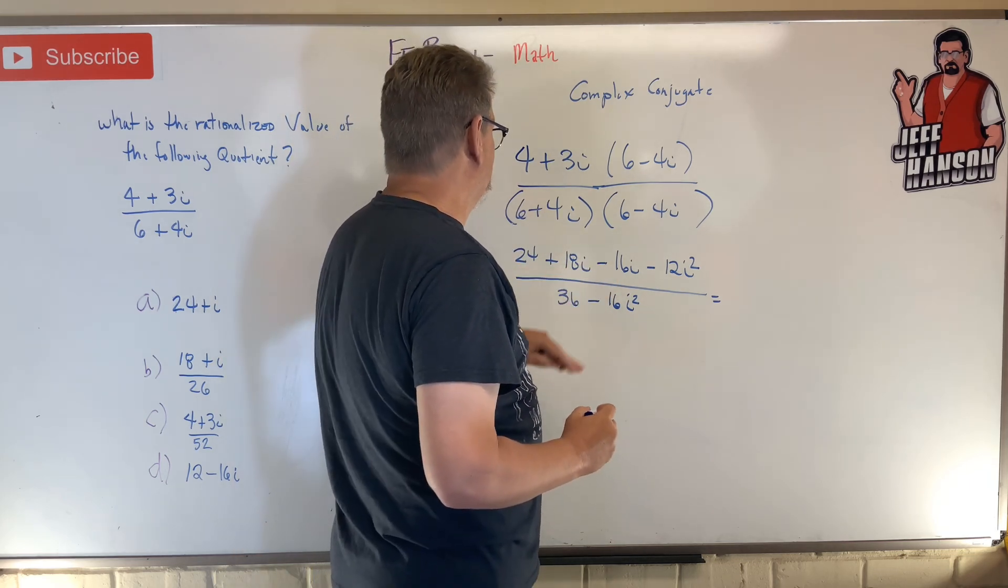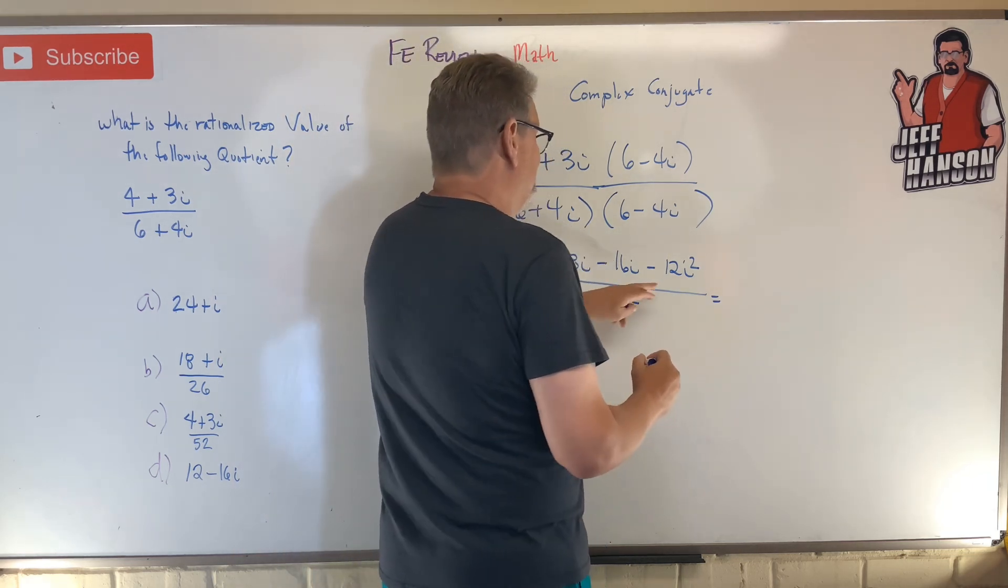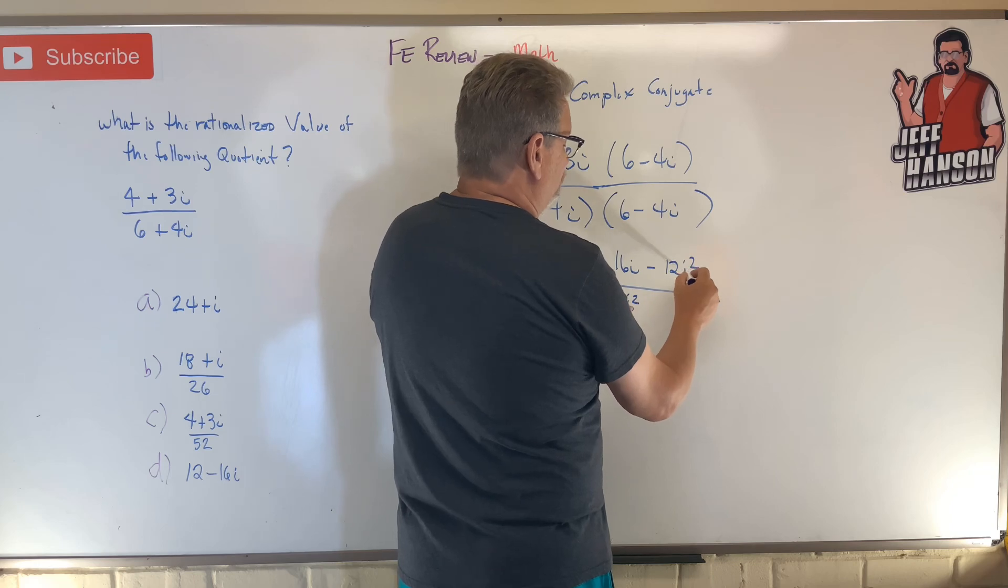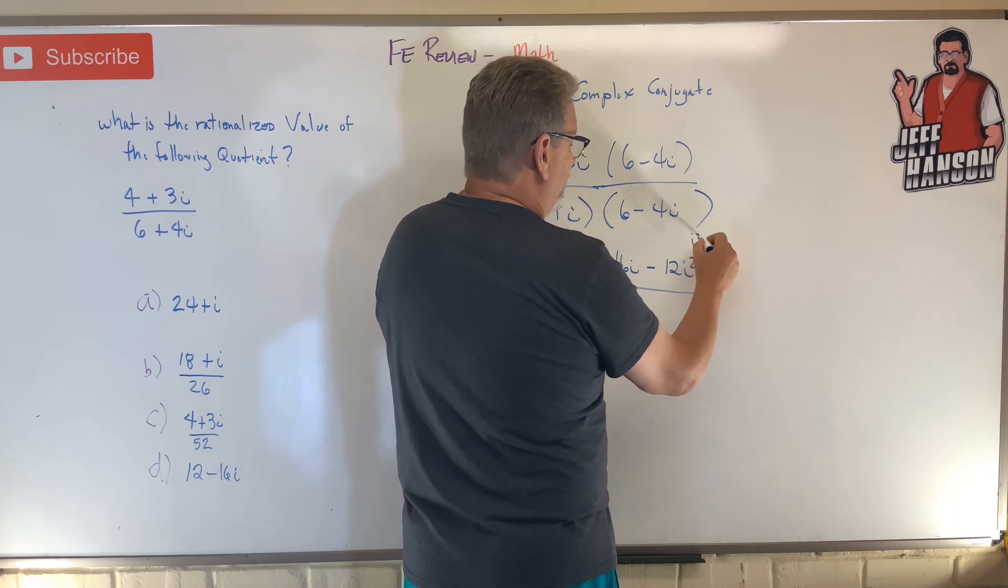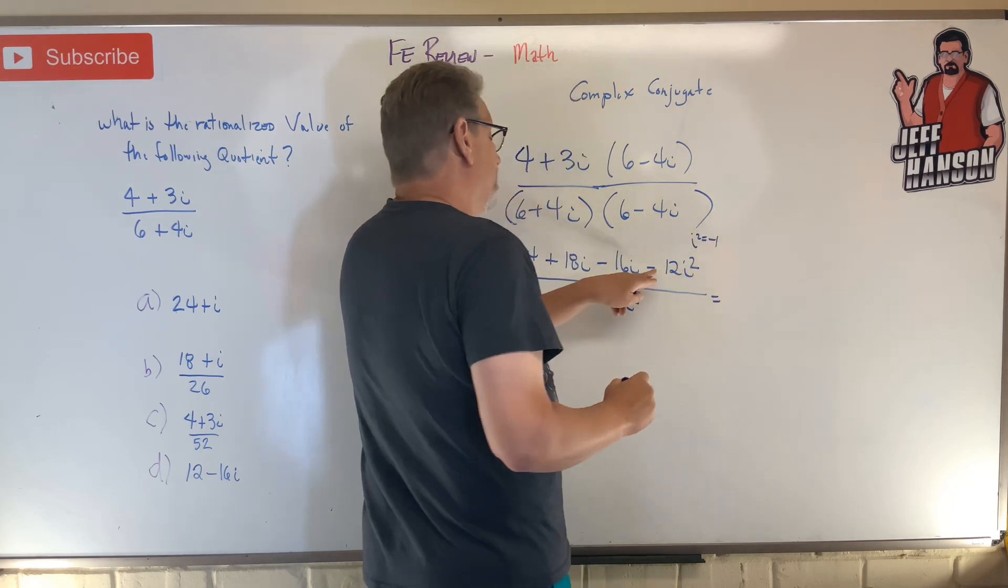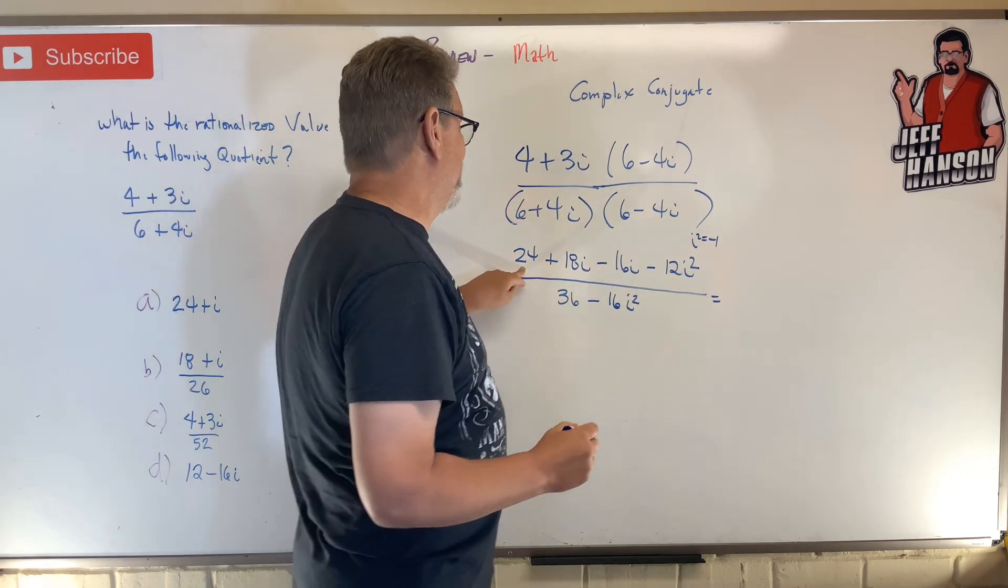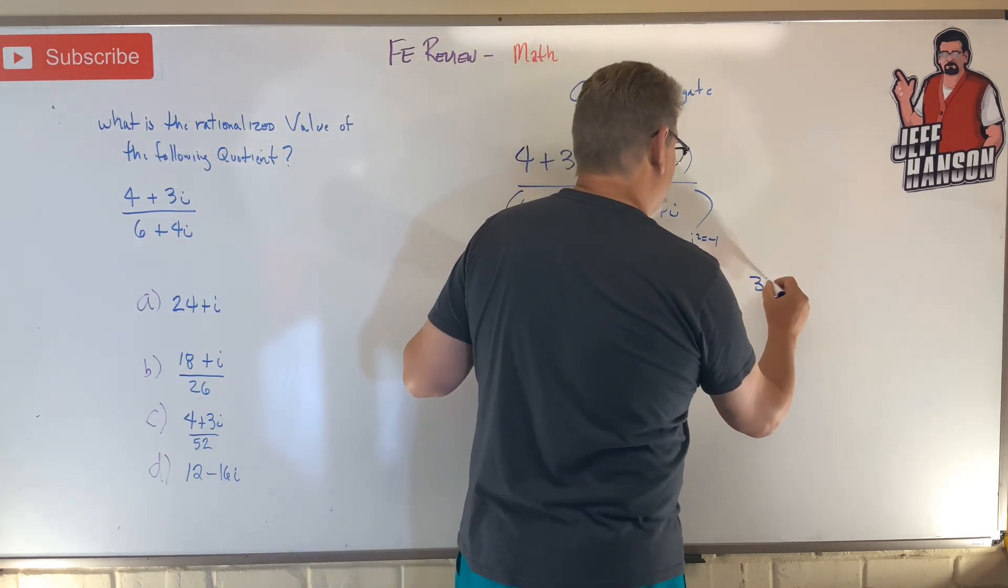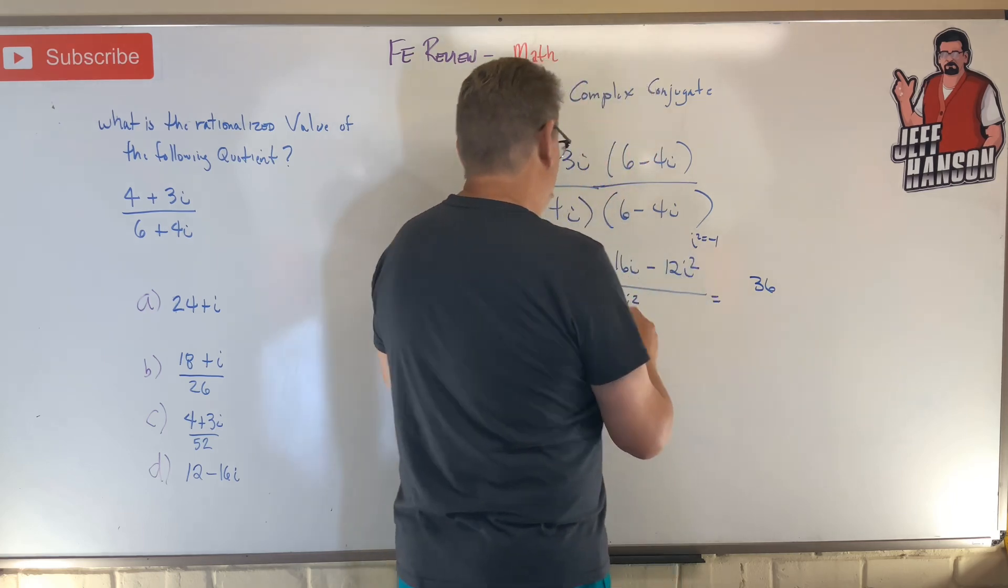Well, number one, these two go together, right? And then this guy is going to turn that from a negative 12 to a positive. Remember, i squared equals negative one, so it's going to become positive 12. So that becomes 36.